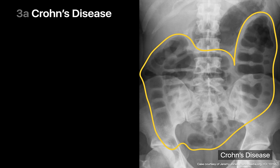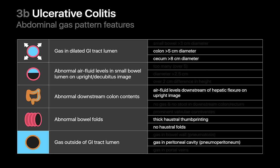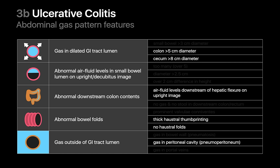X-ray findings of ulcerative colitis are mostly confined to the colon and include gas-filled or abnormal air-fluid levels in dilated colon. Loss of colonic haustration or abnormally thickened haustral folds and thumb printing can both present. Colonic perforation is a potential complication in severe cases, which can result in free gas in the peritoneal cavity. In this case of ulcerative colitis, pronounced haustral fold thickening and thumb printing are present in the colon while the small bowel gas pattern appears normal.